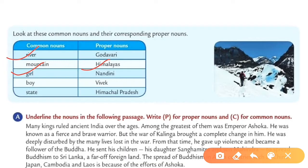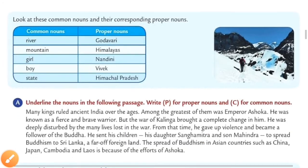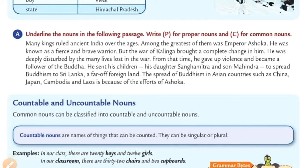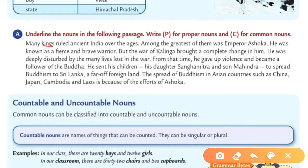Move to Exercise A. Underline the nouns in the following passage and write P for proper noun and C for common noun. Take your notebook and note down the proper nouns and common nouns. Let's start: many kings ruled and sent India over the ages. King is your common noun — write C. India is the name of one particular country, so it is your proper noun — write P.